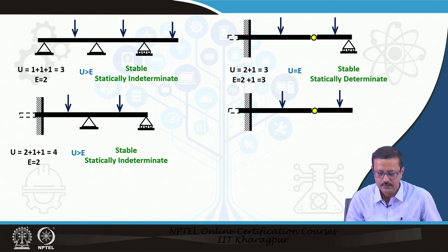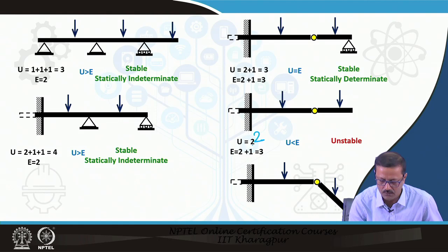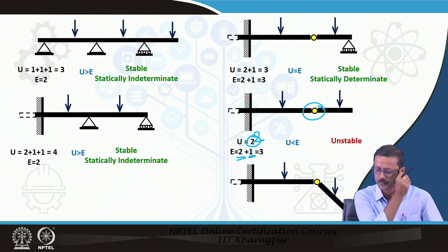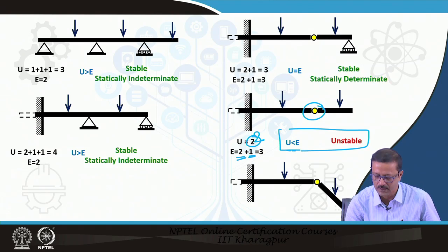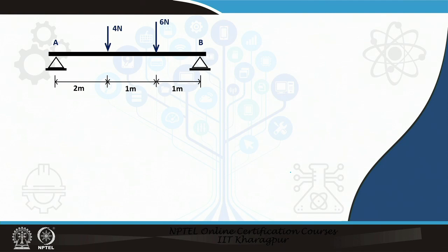If the same configuration has fewer unknowns — say 2 unknowns but 3 equations available — it is an unstable case. As you can see, if a load is applied, the hinge will cause instability and the structure will rotate.